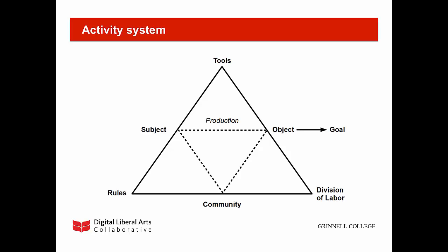The community is comprised of multiple individuals who interact with the same object and who share the same goal. The division of labor refers to both the horizontal division of tasks between members of the community and to the vertical division of power and status. Finally, rules are explicit and implicit regulations, norms, and conventions that constrain actions within the activity system.